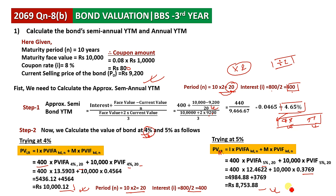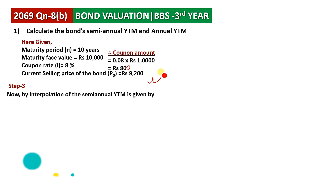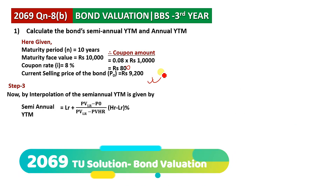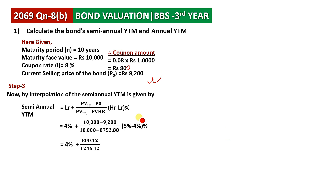Step 3: We find the exact semi-annual YTM using interpolation. The formula is: lower rate plus (PV at lower rate minus P0) divided by (PV at lower rate minus PV at higher rate), multiplied by (higher rate percentage minus lower rate percentage). The lower rate is 4% and the higher rate value is 8,753.88. The interpolated semi-annual YTM comes out to 4.64%.